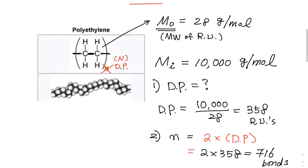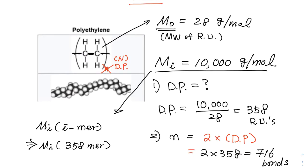So, the polyethylene looks like here. So, for this one, I can even elaborate that. Okay, so that 10,000 is essentially Mz, and we call z-mer, and how many mers you have. In this case, it's Mz, 358 mers, right? This is a polymer with that many mers. But this is a polymer with twice as many bonds than the number of repeating units.